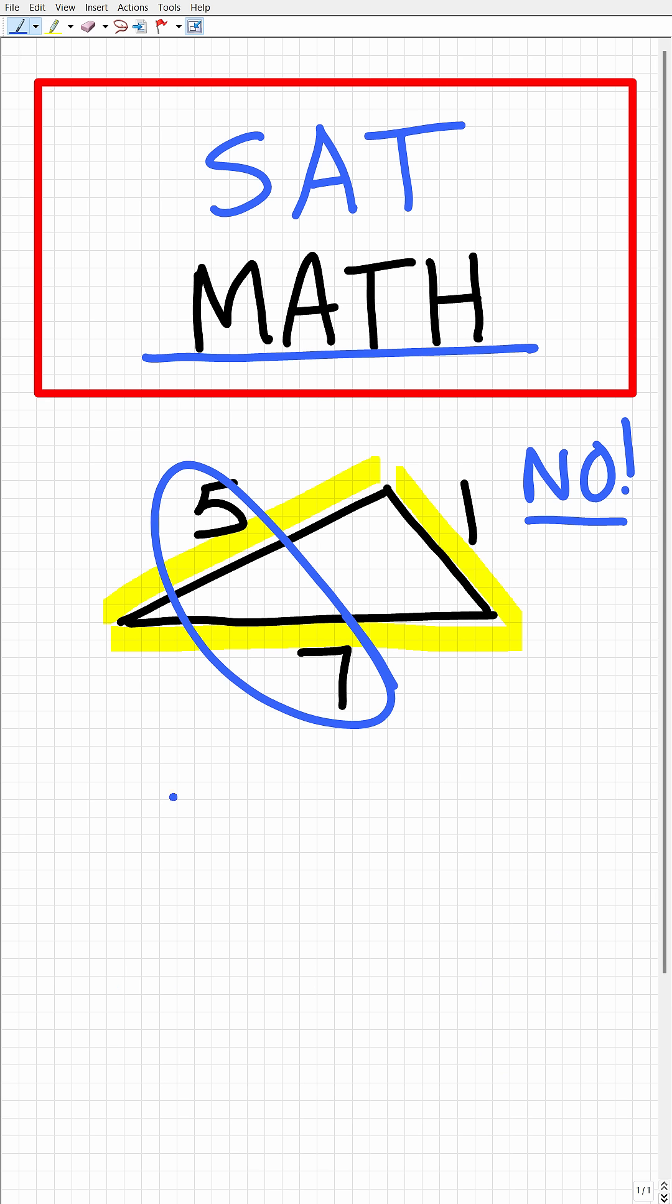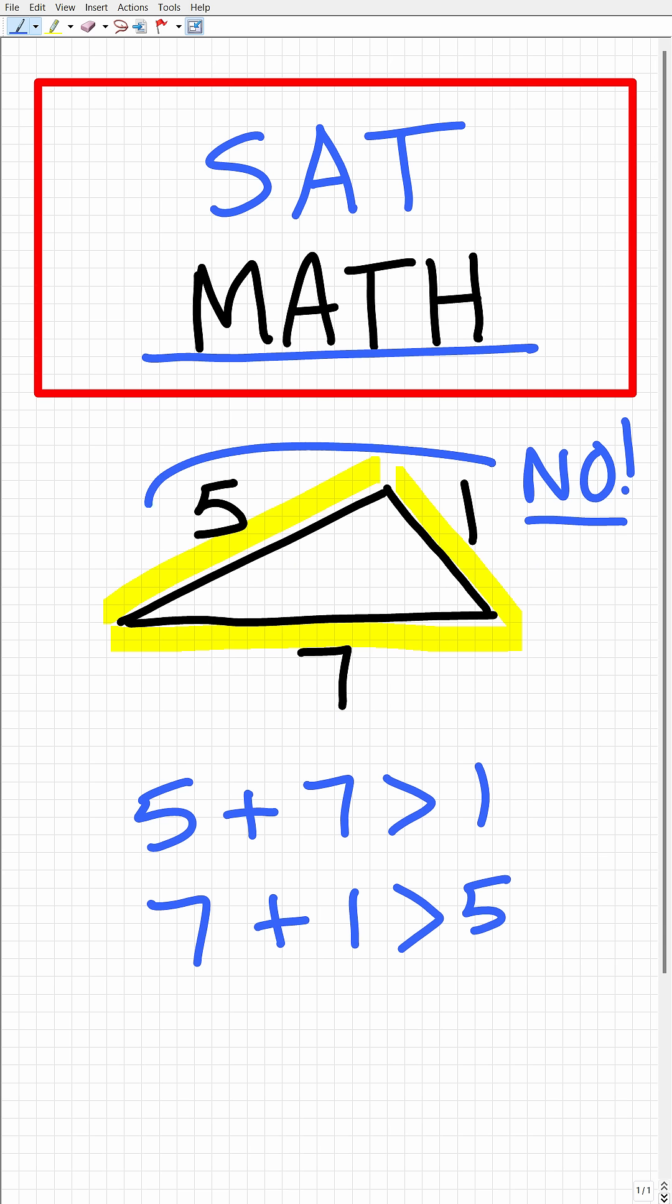So if we add 5 and 7, that's not a problem because 5 plus 7 is greater than 1. And then right here, 7 plus 1, well, that's greater than 5. So no issues there. The problem arises when we add 5 and 1. Because 5 plus 1 is not greater than 7, this is not an actual triangle.